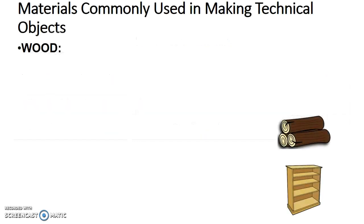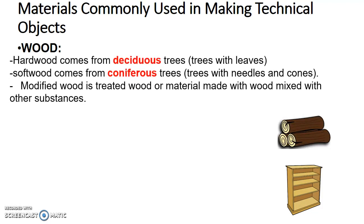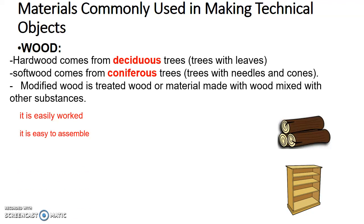Let's look at wood. There are different types: hardwoods come from deciduous trees, softwood from coniferous trees, and modified wood is treated wood or material made with wood mixed with other substances. We use wood because it can be easily worked — cut, broken, assembled — it's a good thermal insulator (for example, a wooden spatula won't burn your hands), and it doesn't conduct electricity.